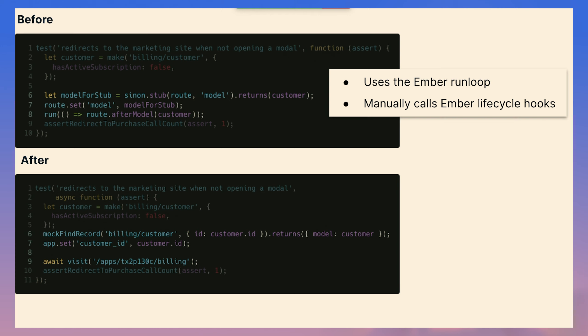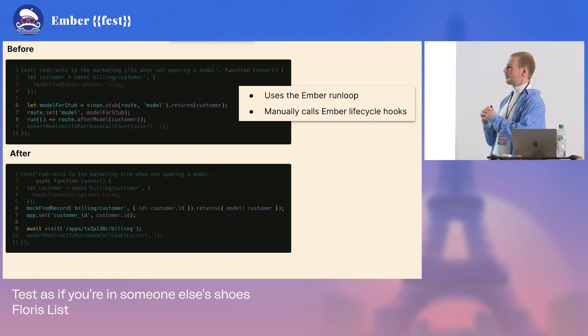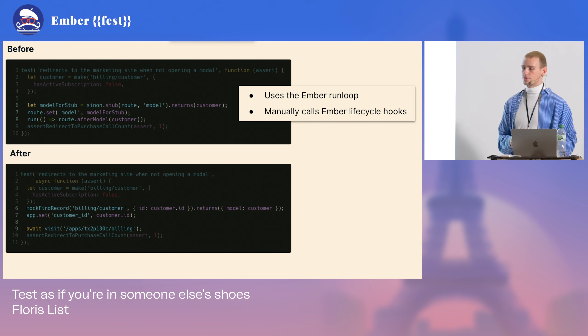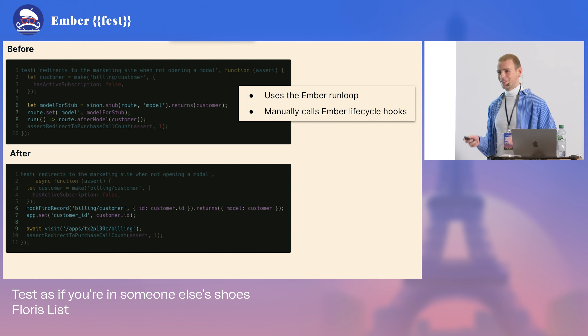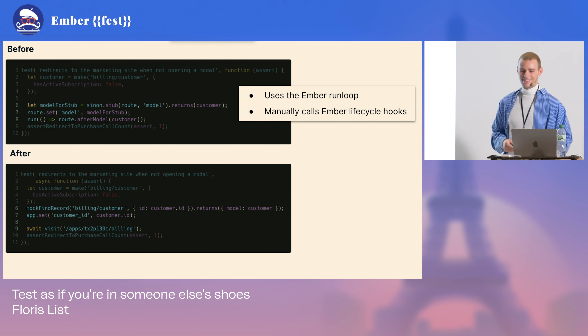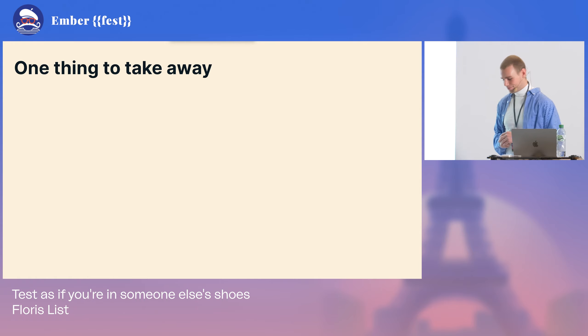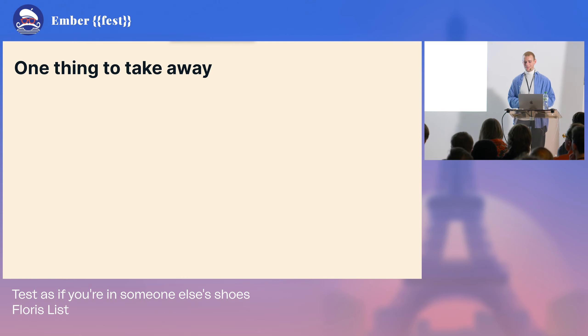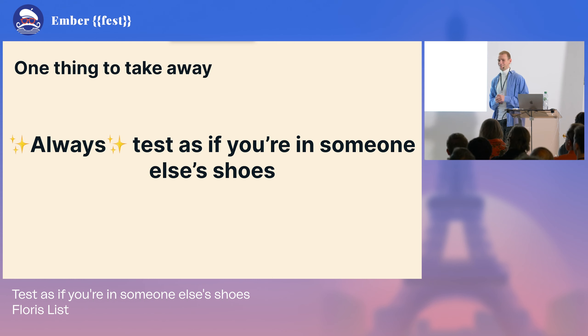The last refactoring: for the redirect, previously we called arbitrary Ember lifecycle hooks, which beats the point. Instead, we set our fake user into the state where they should be redirected, visit the URL, and verify that the redirect happens — more like how a user would actually do it. One thing to take away: always, always, always test as if you're in someone else's shoes, and it will make the world a better place. Thank you.